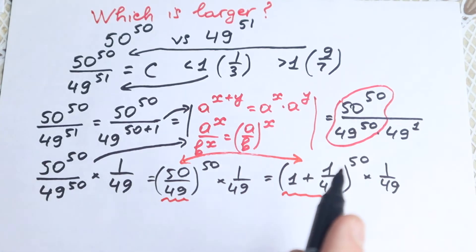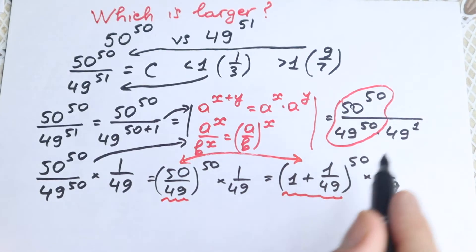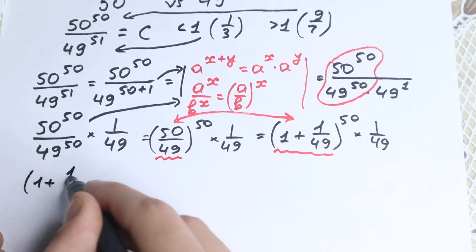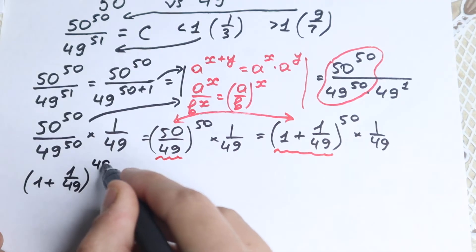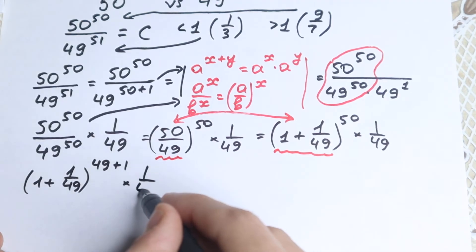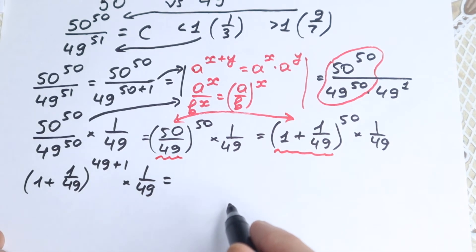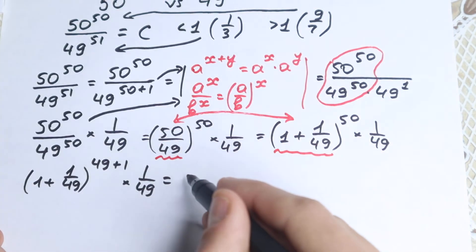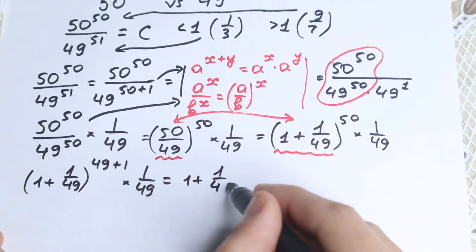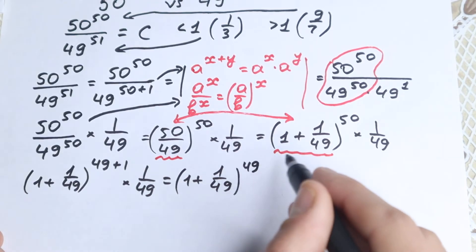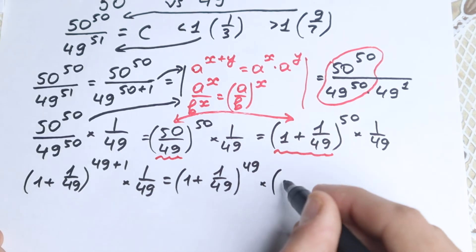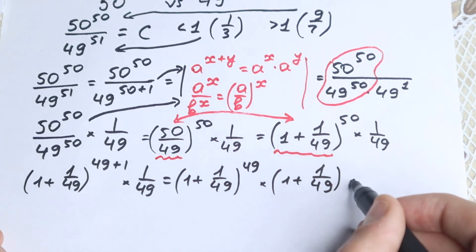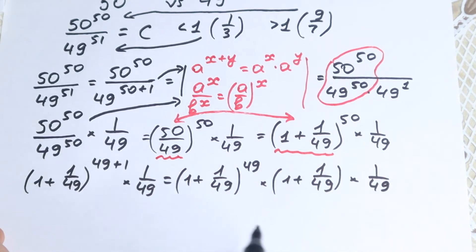Now I want to write 50 as 49 plus 1. In 30 seconds I'll tell you why. So we have: 1 plus 1 over 49, all raised to the power 49 plus 1, times 1 over 49. Applying the same rule — a to the power x plus y — this becomes: 1 plus 1 over 49, to the power 49, times 1 plus 1 over 49, to the first power, times 1 over 49.